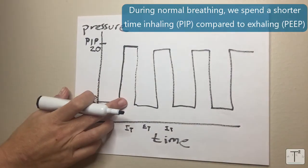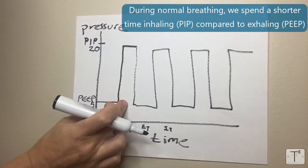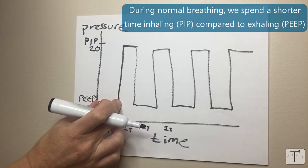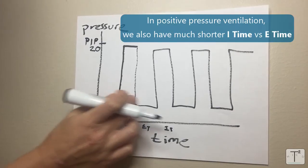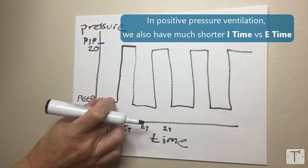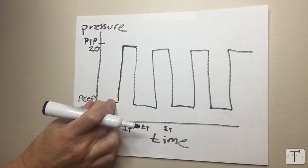When we breathe normally we spend a shorter time inhaling or creating a PIP as compared to exhaling or time in PEEP. Similarly when we use positive pressure ventilation we also have much shorter I times as compared to E times. I don't think I made it obvious enough on this graph but generally the I time is much shorter than the E time.